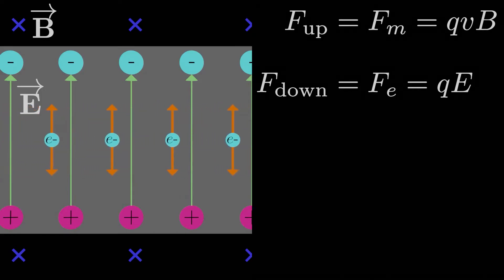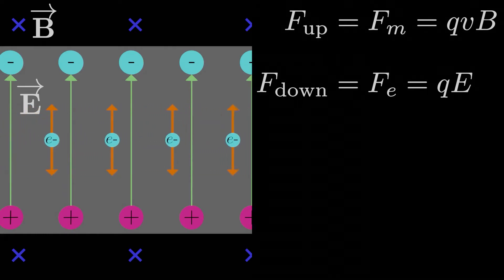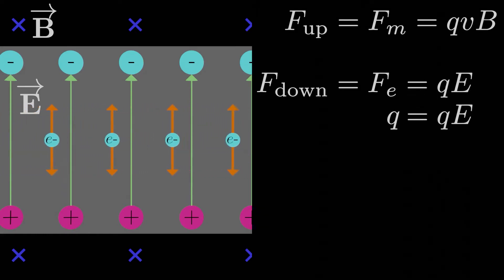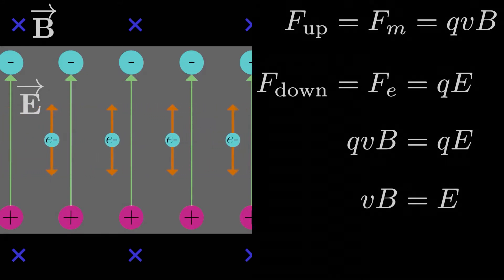Also keep in mind, there is no external electric field. These electrons are reacting to the internal electric field generated by excess charge on either side. We'll call the magnitude of the electric force as Qe, where E is the internal electric field strength. Since the two forces are perfectly balanced in our simplified model, we have Qvb equals Qe. We can cancel out the Q and we're left with Vb equals E.